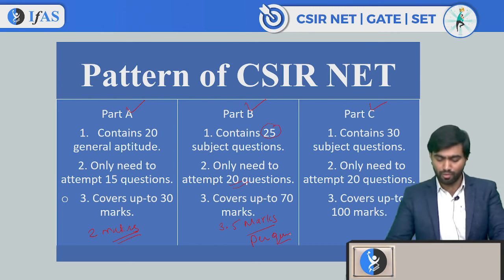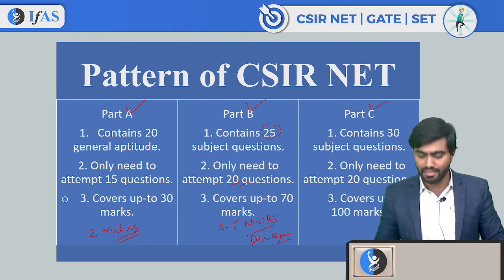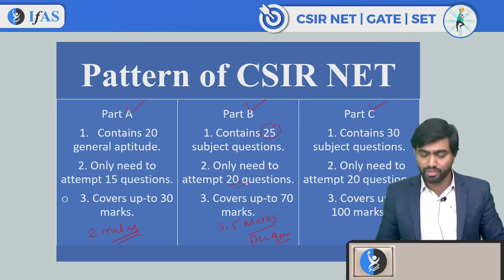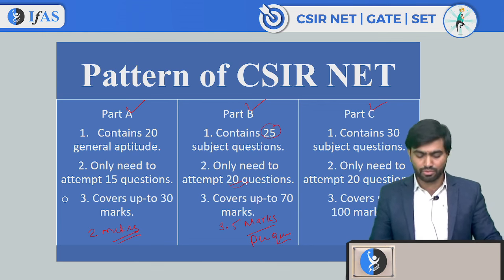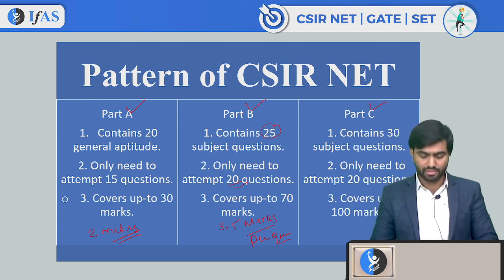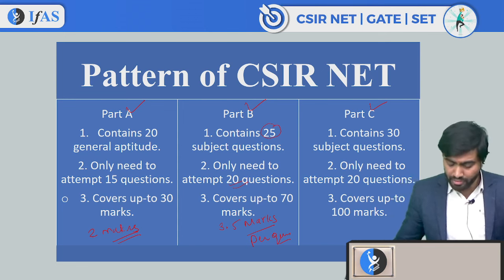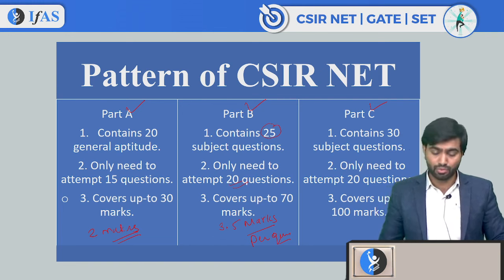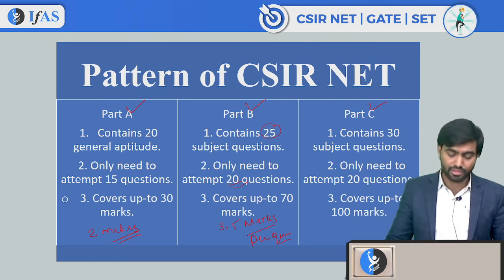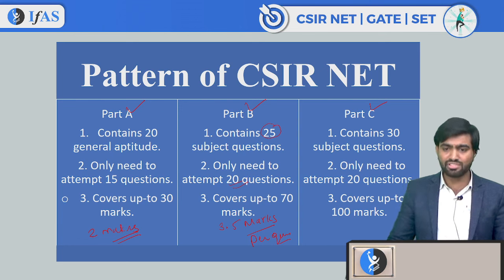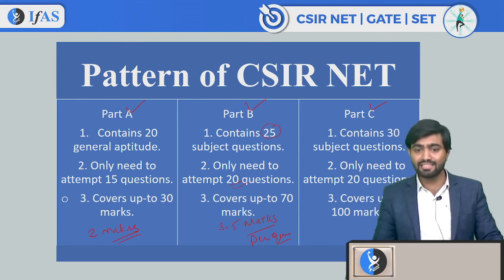Part C covers 30 subject questions of 5 marks each, and you only need to attempt 20 questions, covering 100 marks. So the pattern is: 20 questions from Part A, 25 from Part B, and 30 from Part C — totaling 75 questions, out of which you only need to attempt 55. The extra 20 questions give you the flexibility to choose which ones to attempt.